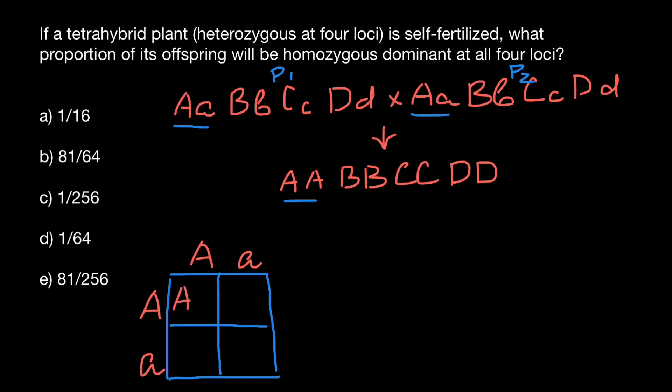Take a look. The Punnett square gives us capital A capital A, capital A small a, capital A small a, and small a small a. As you can see, the probability is one quarter.